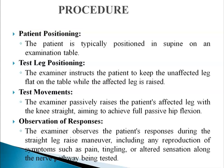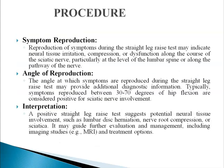For observation of responses, the examiner observes the patient's responses during the SLR, including the reproduction of symptoms such as pain, tingling, and altered sensation along the nerve pathway being tested. The reproduction of symptoms during the SLR test indicates neural tissue irritation, compression, or dysfunction along the course of the sciatic nerve, particularly at the level of the lumbar spine.